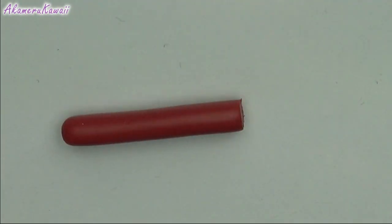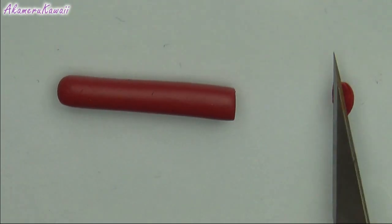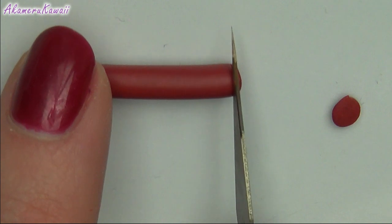For pepperoni, roll a snake of brownish red clay and cut to small slices. This is the same color I used for my red velvet cake.